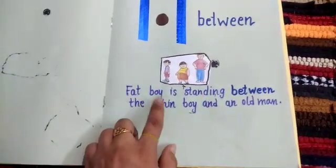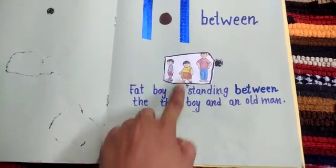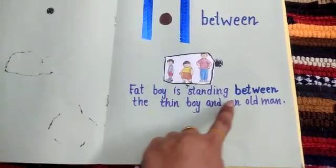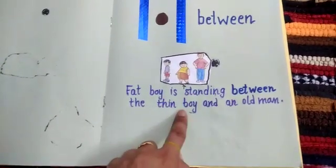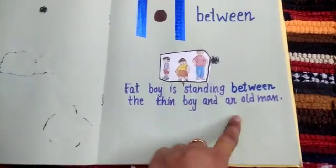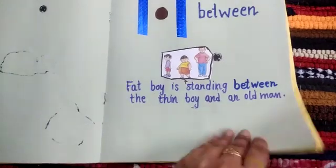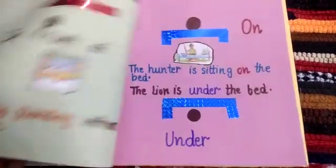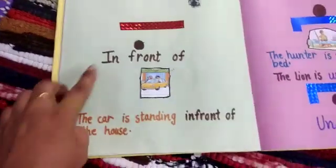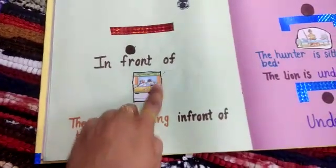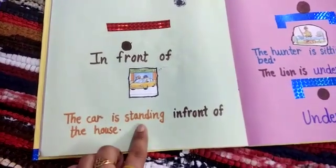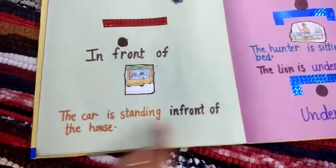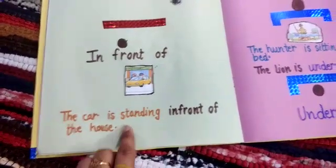The fat boy that is standing between the thin boy and an old man. In the same way, in front of: the car is standing in front of the house.